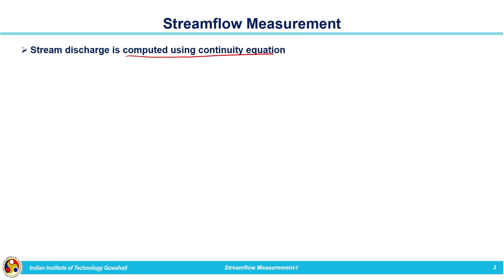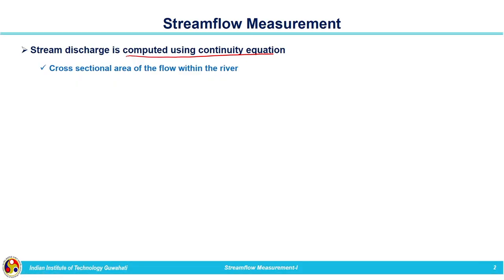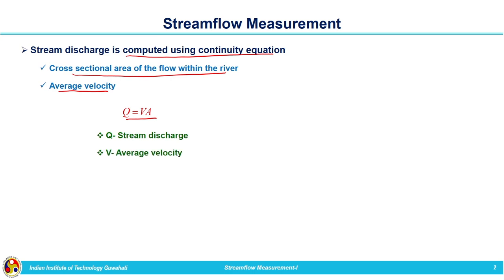Stream discharge is computed using the continuity equation. Once we know the area of cross section and the average velocity, we can easily compute stream discharge using the continuity equation. We need the cross-sectional area of flow within the river and average velocity. We can calculate the stream discharge by using Q = V × A, where Q is the stream discharge, V is the average velocity, and A is the cross-sectional area of the flow within the river.